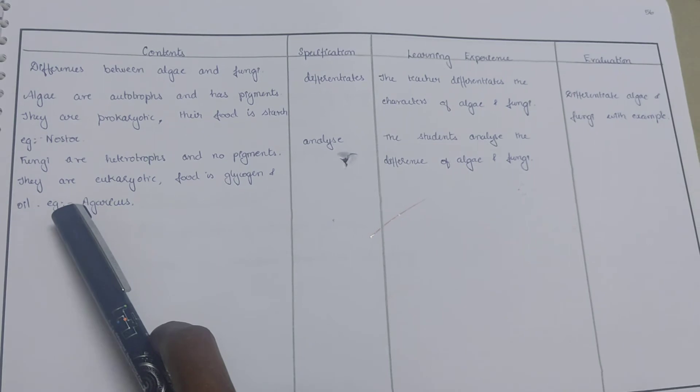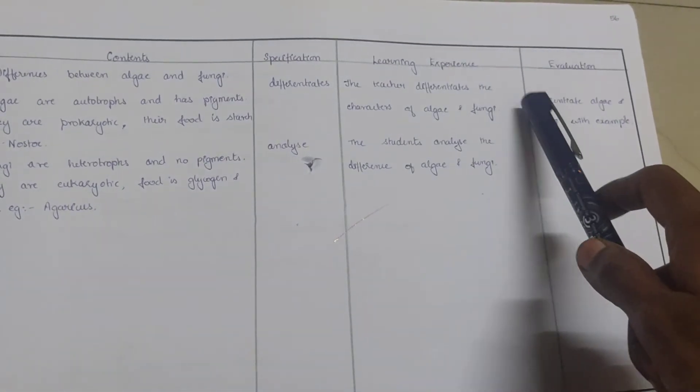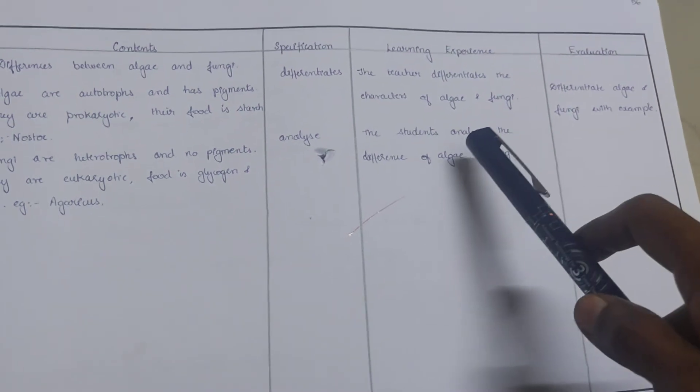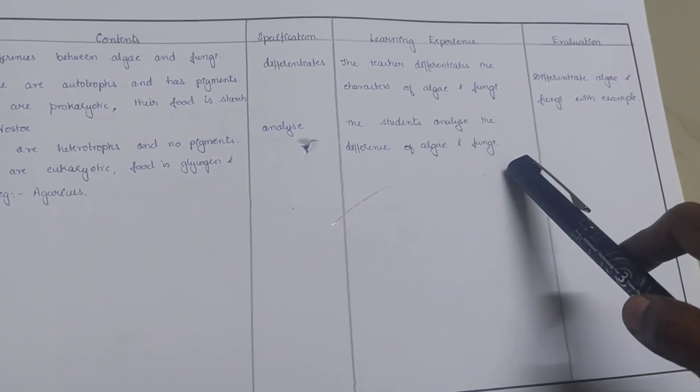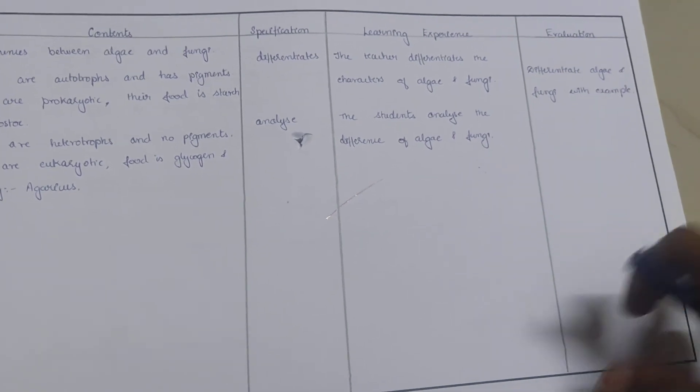The teacher differentiates the characters of algae and fungi, and the student analyzes the differences of algae and fungi. Differentiate algae and fungi with examples is the evaluation part.